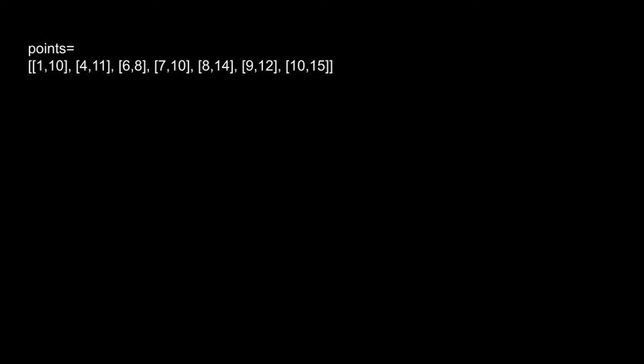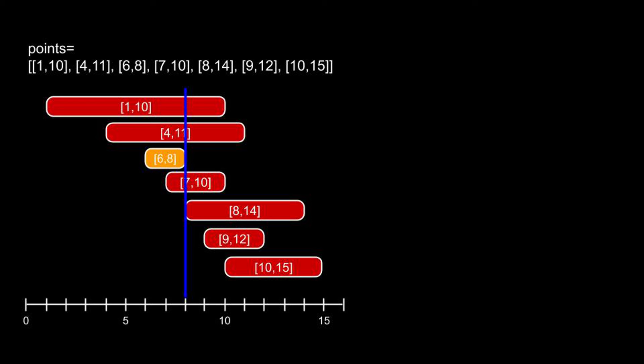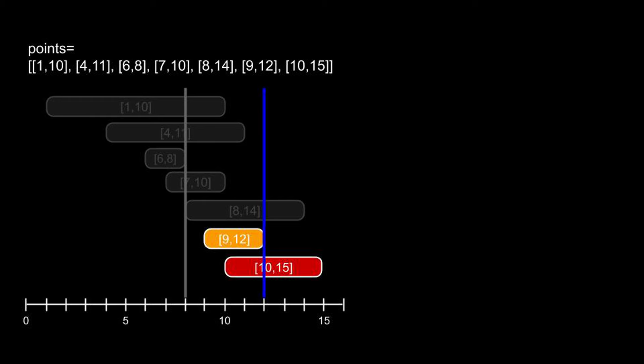We start by sorting the balloons by their start points. The first leftmost arrow must be shot at the balloon with the leftmost end point. This is clear, since otherwise that particular balloon will never be popped. This arrow pops all balloons whose end point is smaller or equal to the end point of this balloon. Repeat until all balloons are popped.